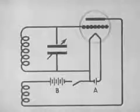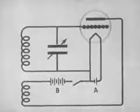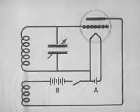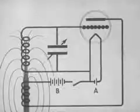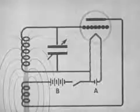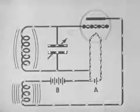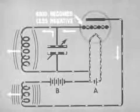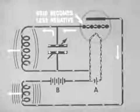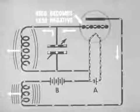When a current flows through the plate coil, the magnetic field of this coil sweeps across the grid coil and induces a voltage in it. This happens when the key is pressed. As the plate coil field builds up, electrons flow away from the grid — thus the grid becomes less negative and more plate current flows.